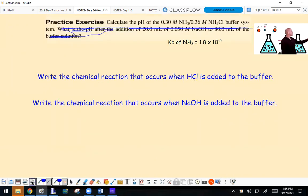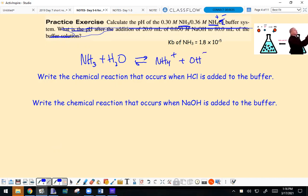Now we have a buffer between NH3 and NH4+. Our spectator is chloride. The reaction is NH3 plus water - this time it's a base with a Kb. You get the conjugate acid NH4+ and hydroxide.